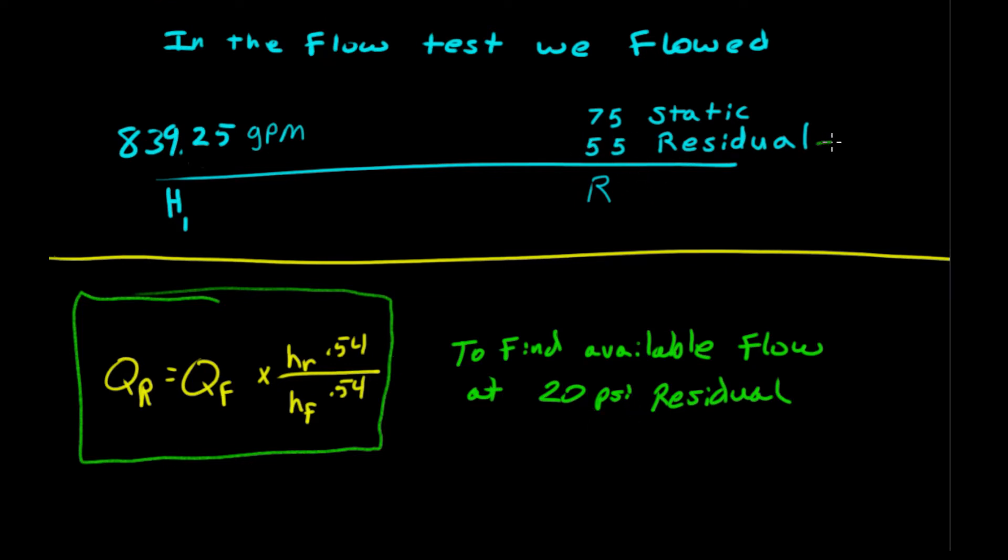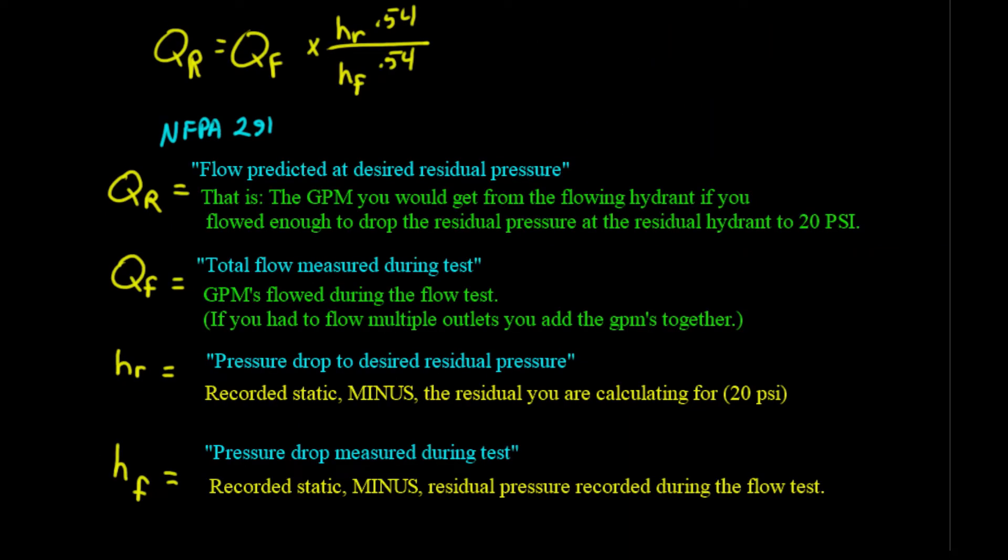If we drop this number here down to 20 PSI, we should be able to get more gallons per minute out of hydrant 1. This equation will tell us how many gallons per minute we can get out of this hydrant if we drop the residual on this one down to 20.